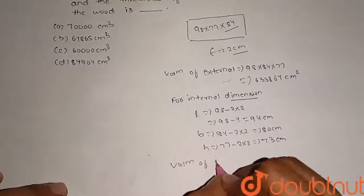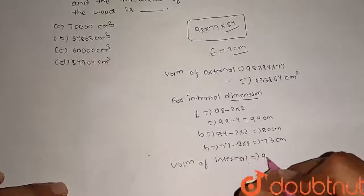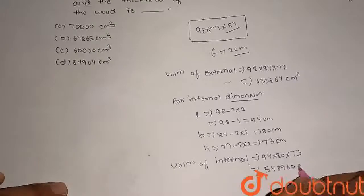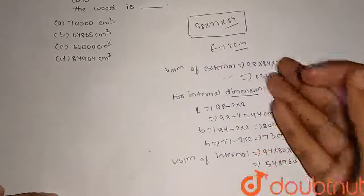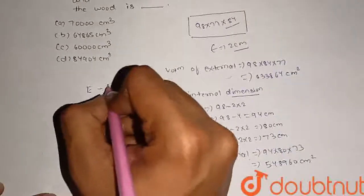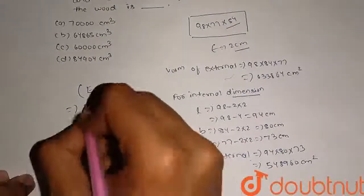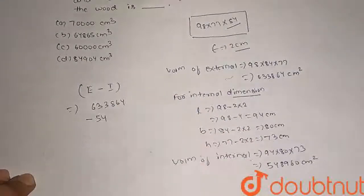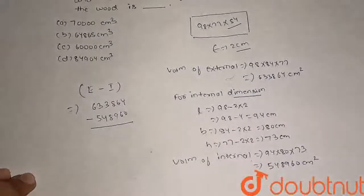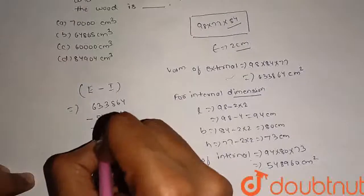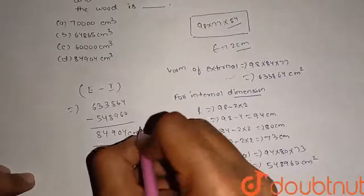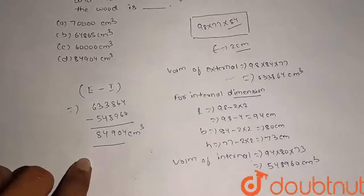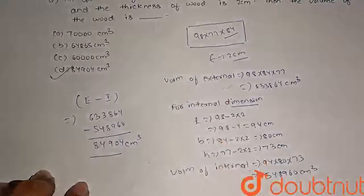You had to find volume of wood. Volume of wood is external minus internal. E minus I, external minus internal. When you calculate this, the option is correct. Thank you.